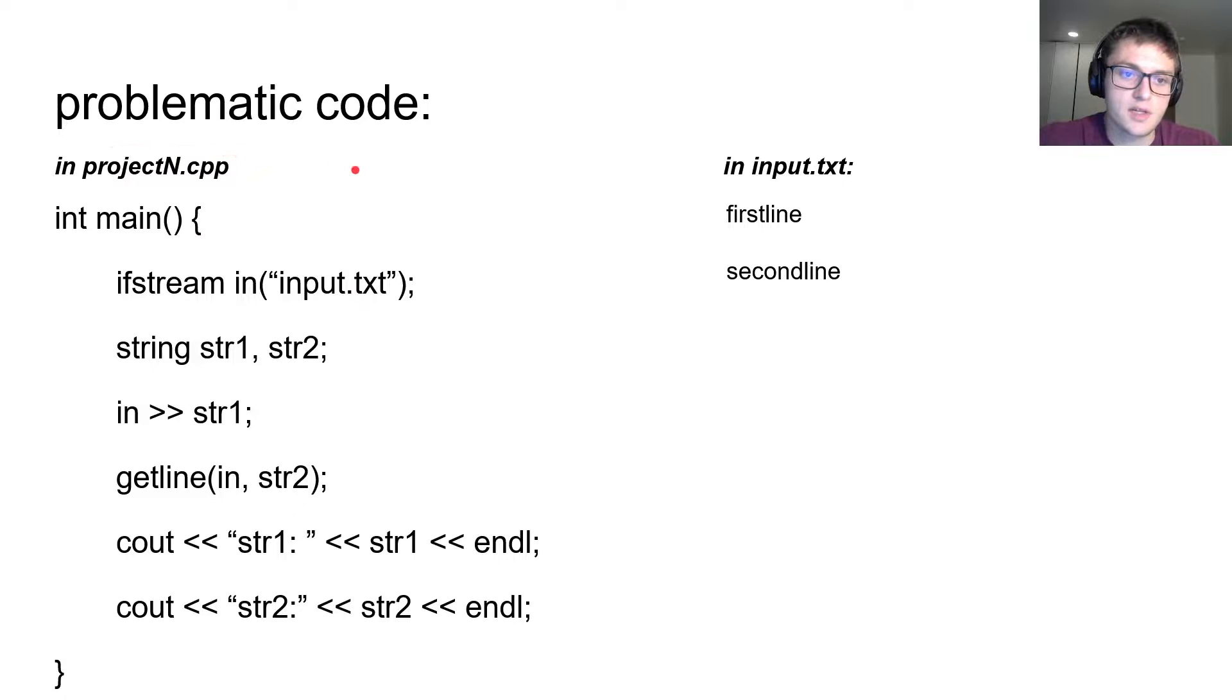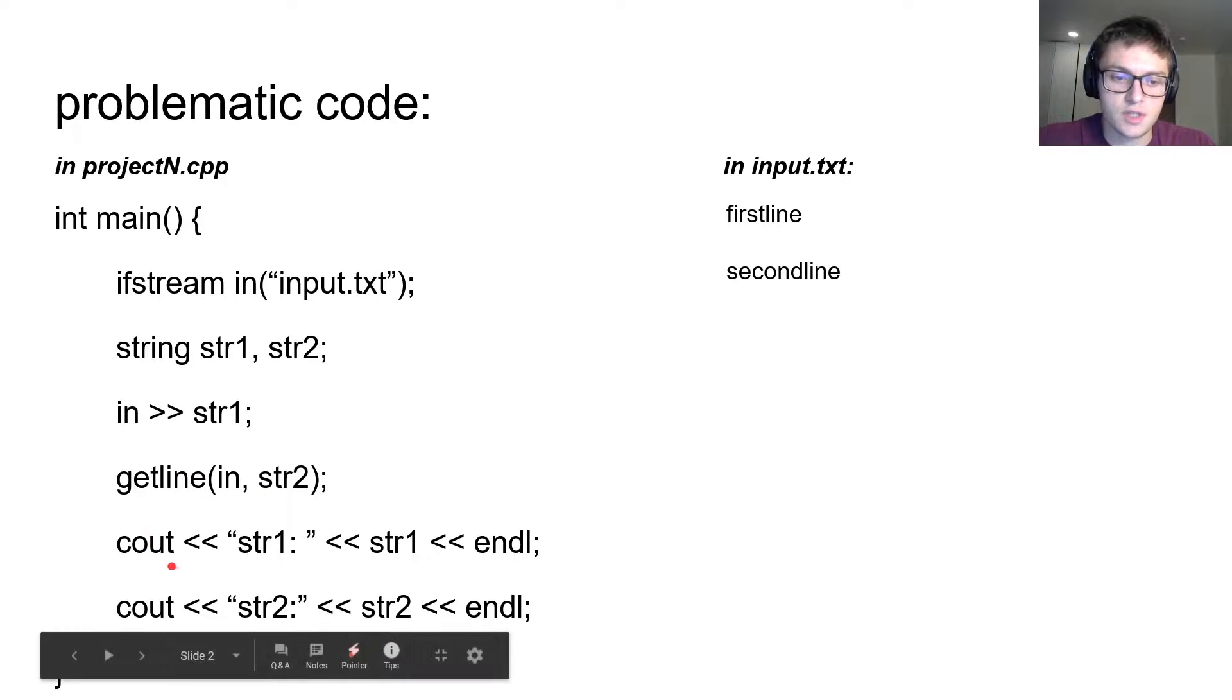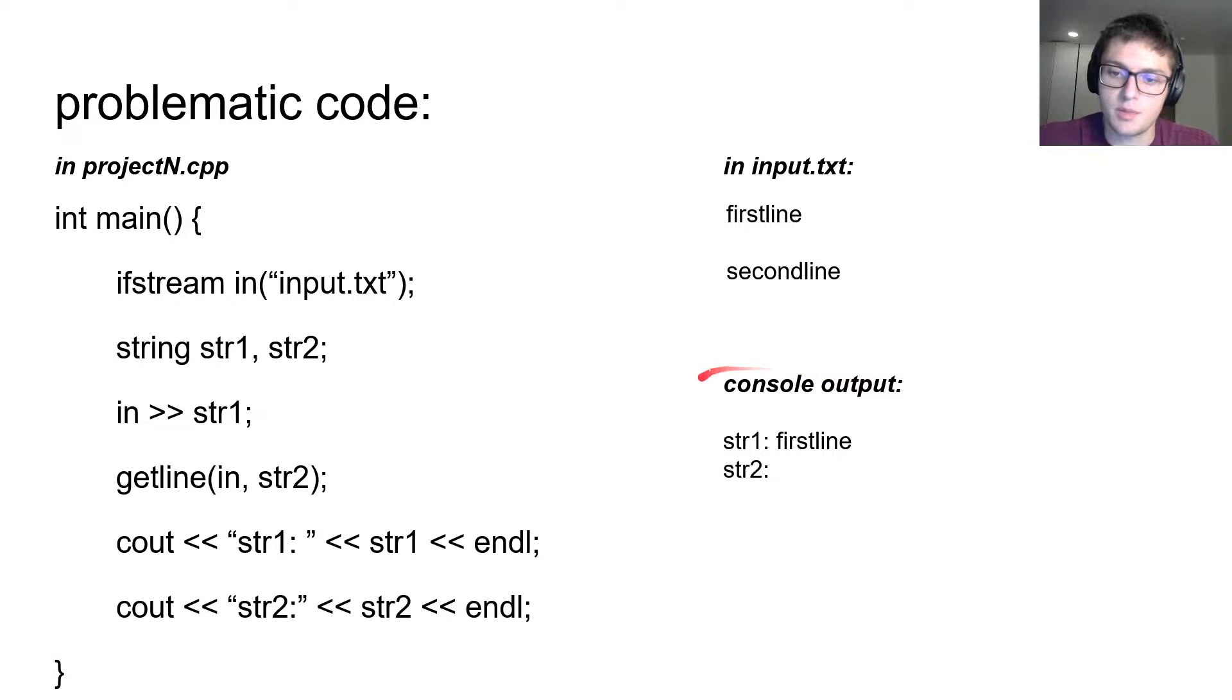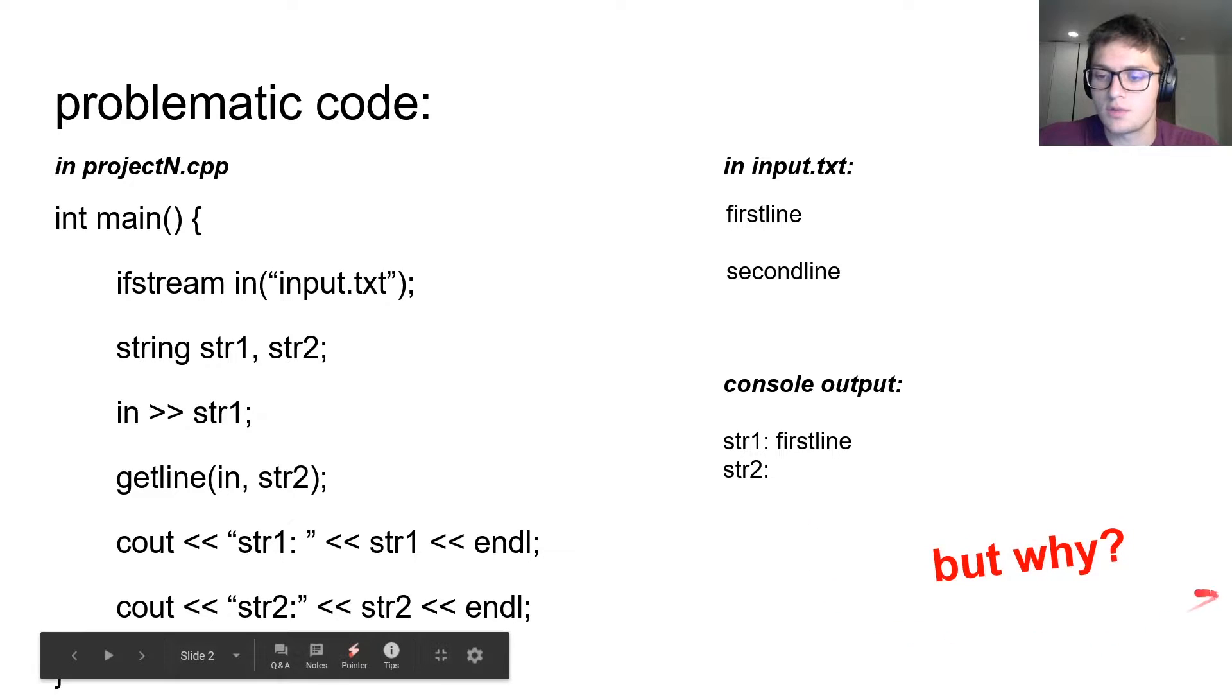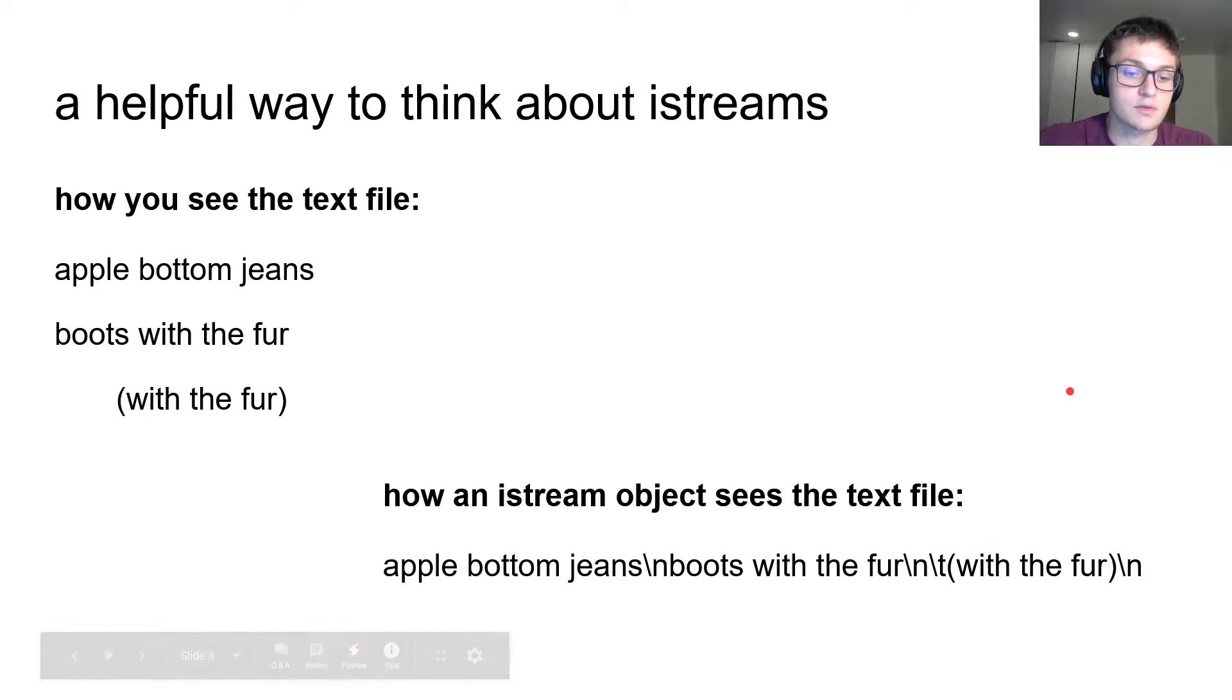Alright, so problematic example. In some CPP file we've got an input.txt file, we have an iStream trying to read in the data from this text file, get it into two strings. The first string we're trying to read in with the iStream extraction operator and the second string we'll use getline for. It doesn't seem like there's anything too sketchy in this code. If we print out str1 we probably expect that first line would be in there and then str2 we would expect for second line to be in there. But of course this is a problematic example, so when we print str1 we see first line but when we print str2 we don't see anything. And I'm sure some of you will be asking, but why? And that is the reason for this slide deck.